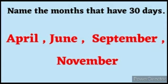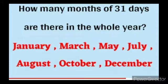Now children, see the next question. How many months of 31 dates are there in the whole year? January, March, May, July, August, October, December — these months have 31 dates.